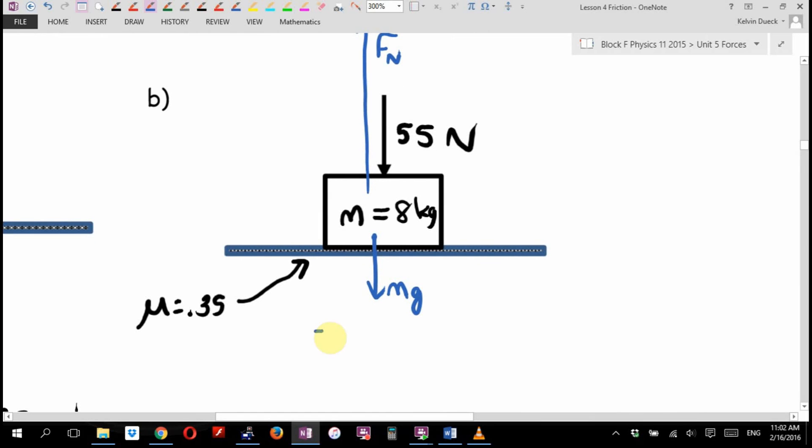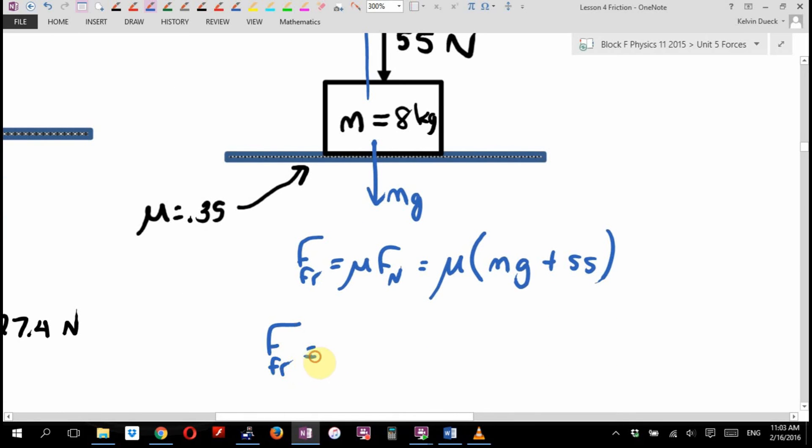Now suppose we want to start moving this box across the floor. How big is friction? Well, friction is mu times the normal force. I don't know the normal force. Oh, but look, I know a way to figure out the normal force. It's going to be mu. How big is the normal force here? I'm going to go Mg plus 55. Gravity, bigger than gravity. So I always write gravity first if I can. Then plus. Now it's plug and chug. Friction is going to be 0.35 times 8 times 9.8 plus 55. And you'll probably have to put that thing in brackets.